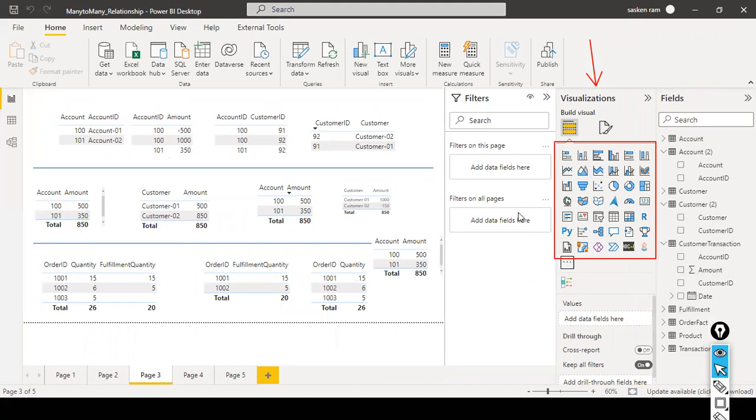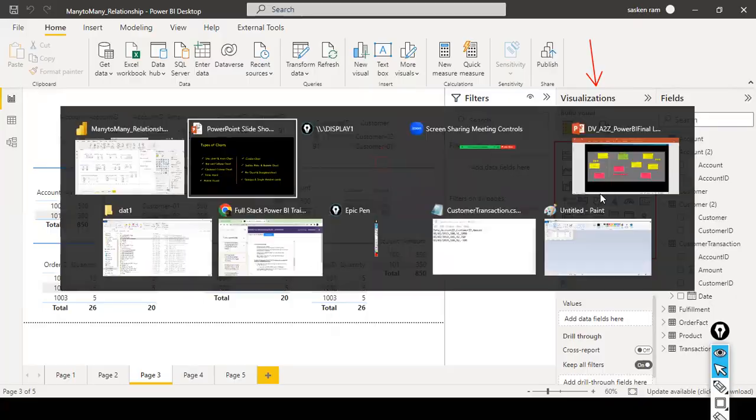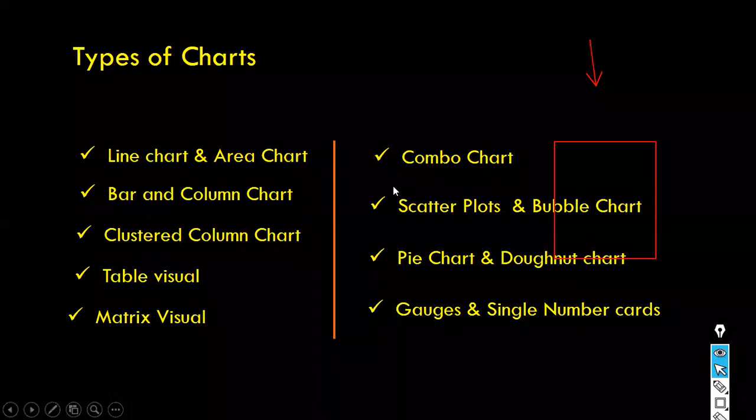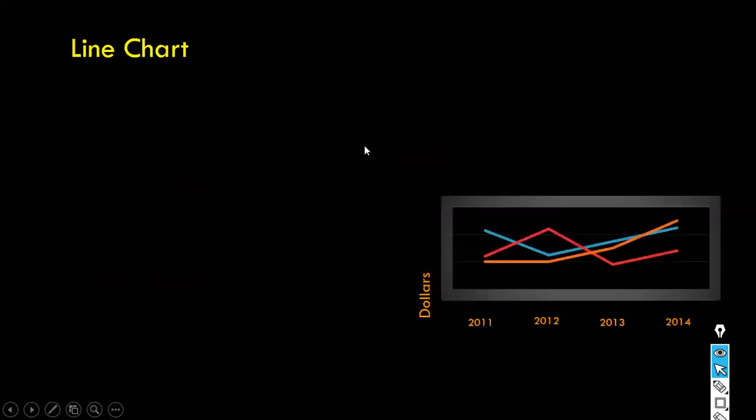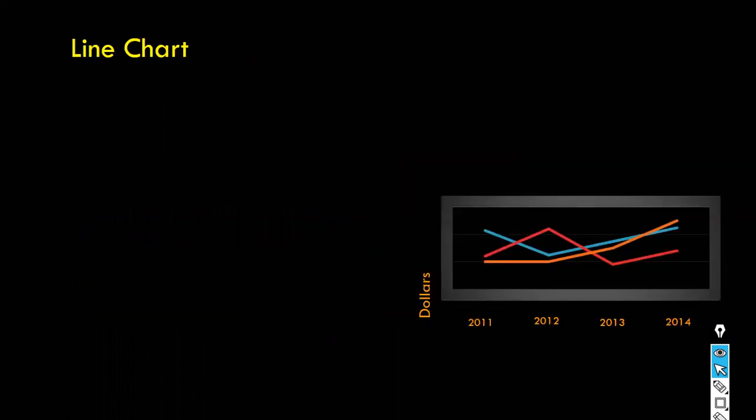So a lot of visualizations are there. We will go through all the visualizations, whatever is available by default as part of the Power BI desktop. We will explore it first. Now to start with, the line chart and area chart. I will cover the custom visual, so don't worry. Now let us start with understanding what is line chart and what is area chart.